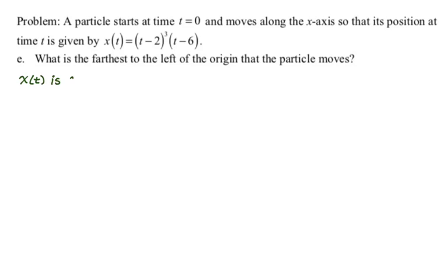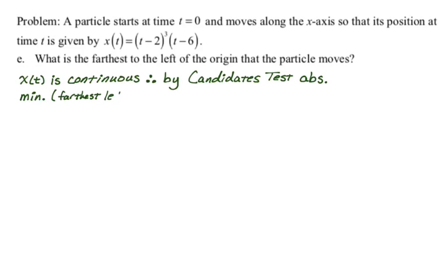So to do that, I need to say that x(t) is a continuous function, which it definitely is because it's a polynomial. So x(t) is continuous. Therefore by candidates test, the absolute minimum, which is really what we're looking for here, so what I'm going to do is clarify that the absolute minimum (the farthest left) is going to occur at an endpoint. And we already know the endpoints, those are zero and six. Wait, when I did this problem, I kind of assumed it was zero to six. Why am I assuming that? Oh, you know, I borrowed that from part A. All right, let's just change the problem and say the farthest left on the interval from zero to six.